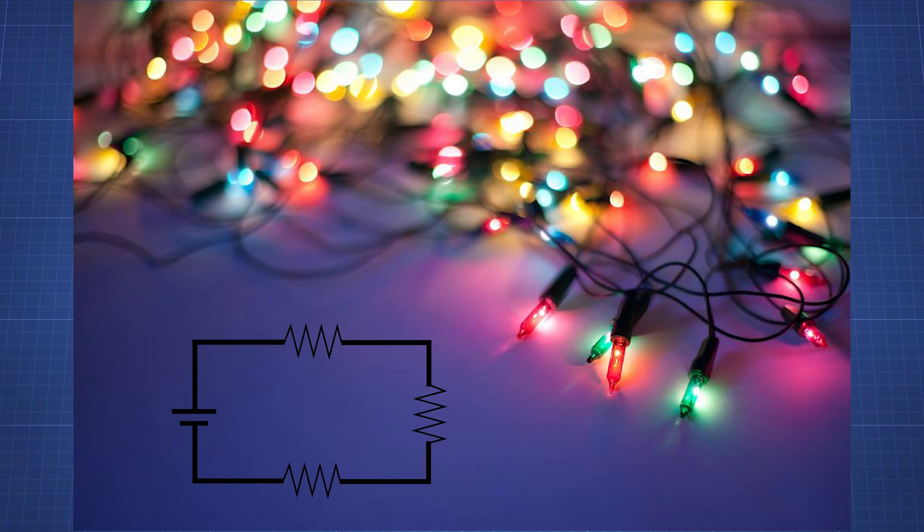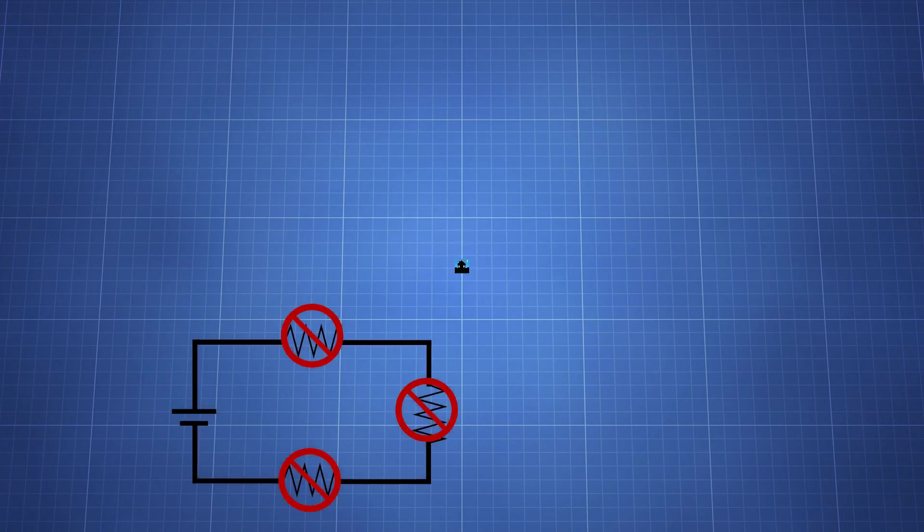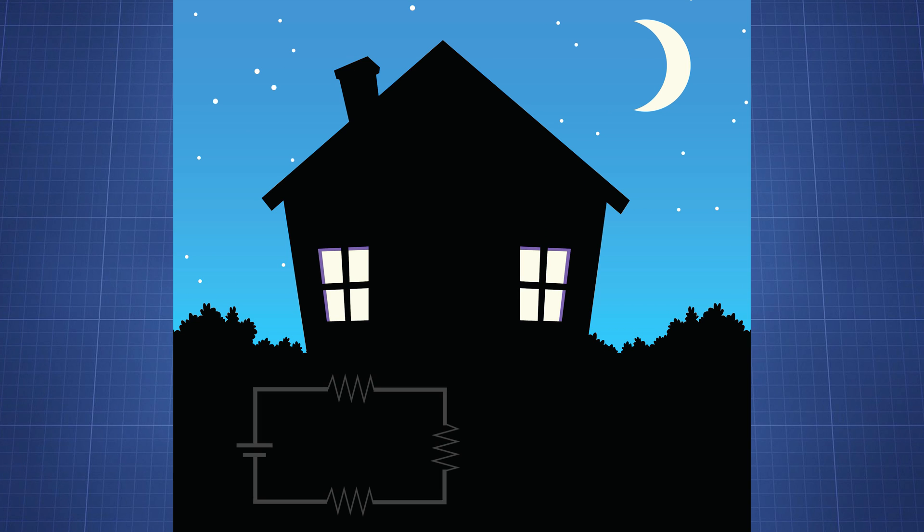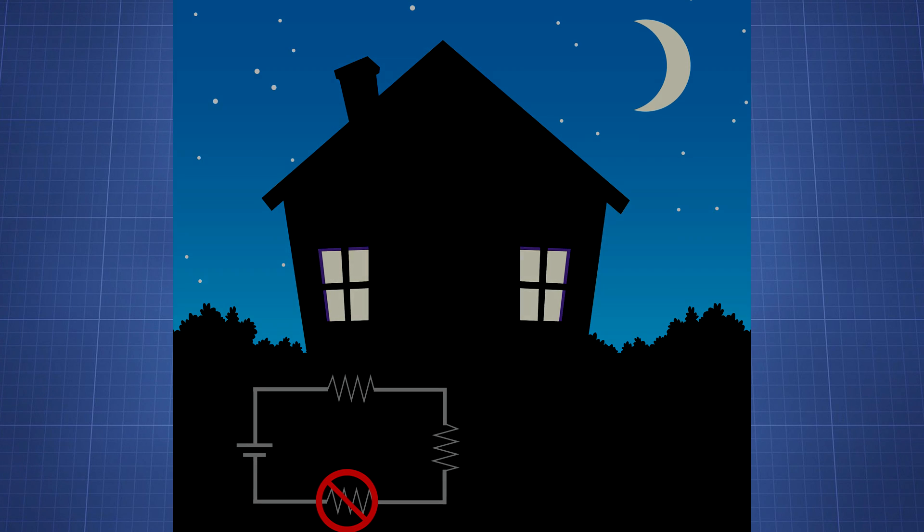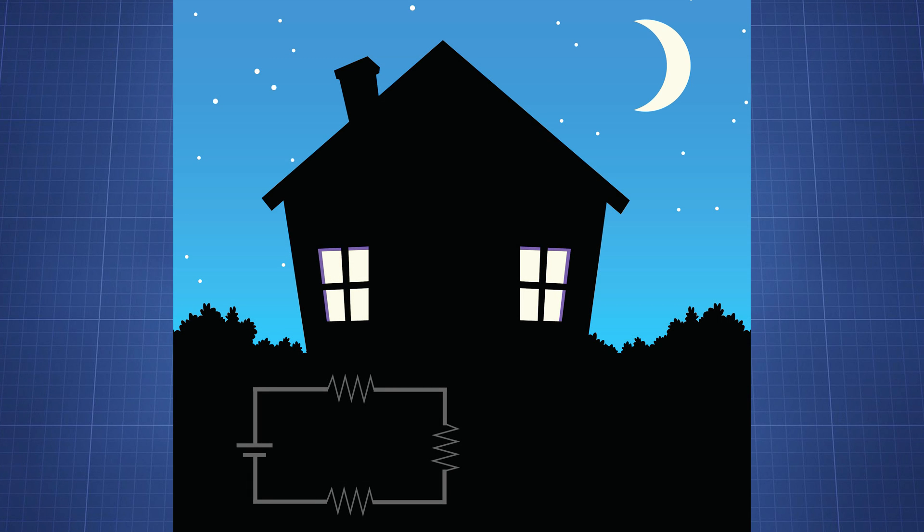Think about Christmas lights. When one bulb breaks, the whole strand goes out. If your house was wired in series, the power would go out every time you turned off the lights. Everything would have to constantly be on.